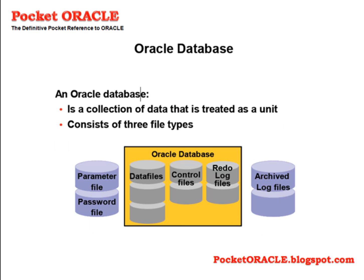Three file types make up an Oracle database, along with a few others that exist externally to the database and are strictly optional. The required files are the control files, the online redo log files, and the data files. The external files are the initialization parameter file, the password file, and the archive redo log files.